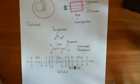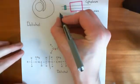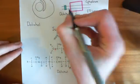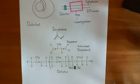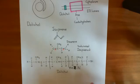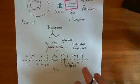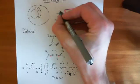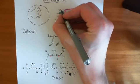So here is dolicol, drawn now just as a turquoise box here. So I'm going to now show you how we're going to build our glycosyl unit that we're going to add on to our protein. And initially, what's going to happen is that initially dolicol's hydroxyl group is going to be facing the cytoplasmic side.